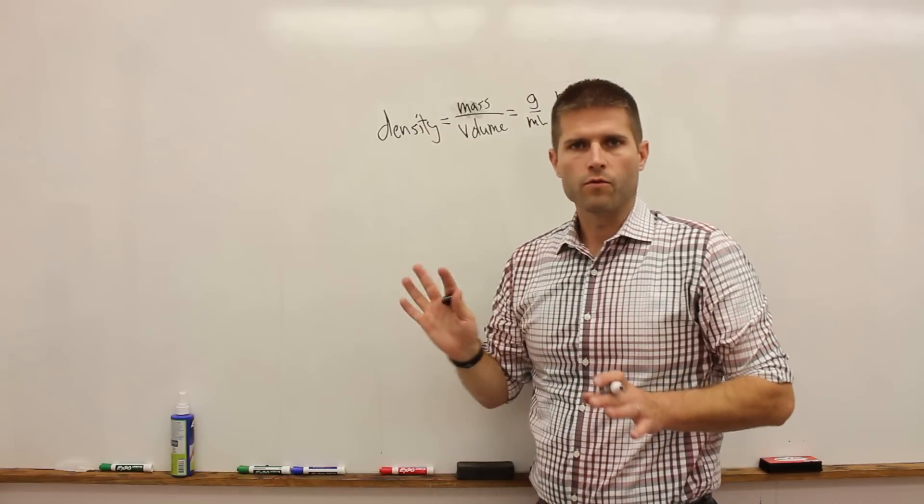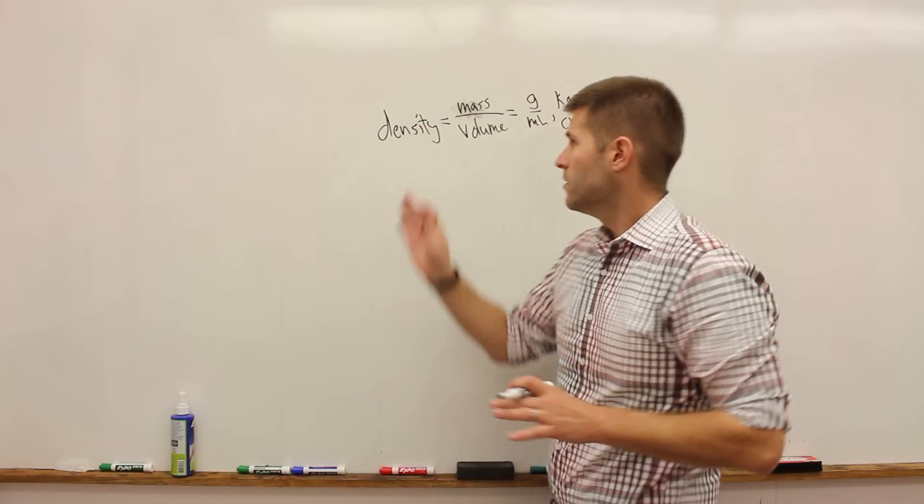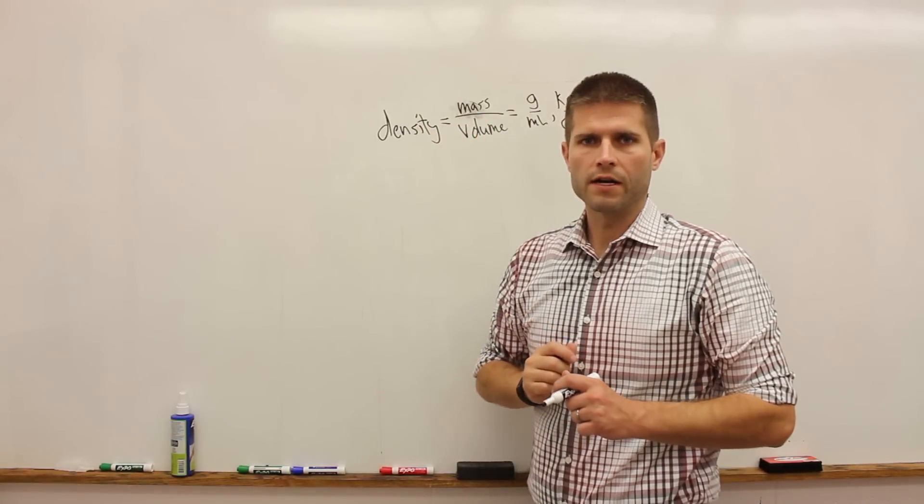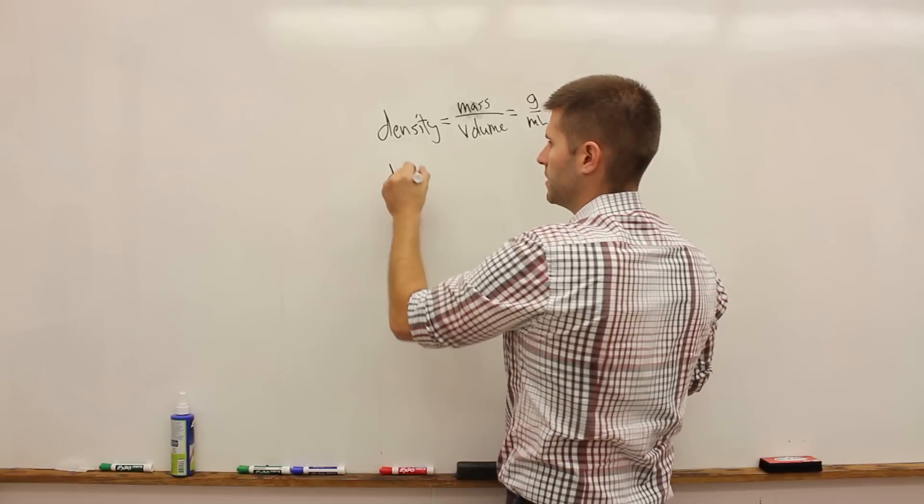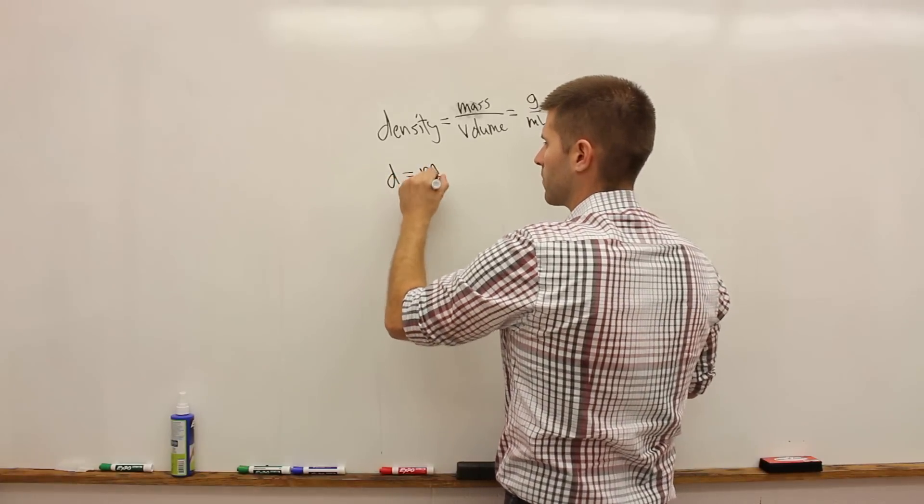So this is density. Of course, we as chemists are lazy in the way that we write. We don't want to write out the words every time we write this equation, so we're going to write out just the first letter in each of these values. So D equals M over V.